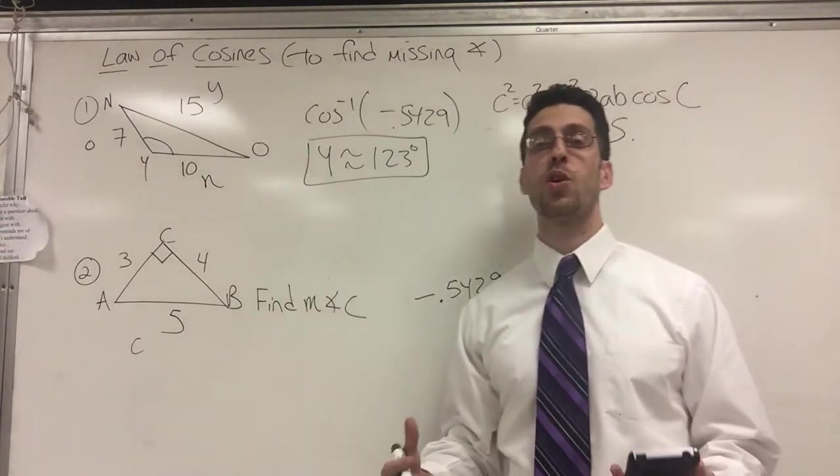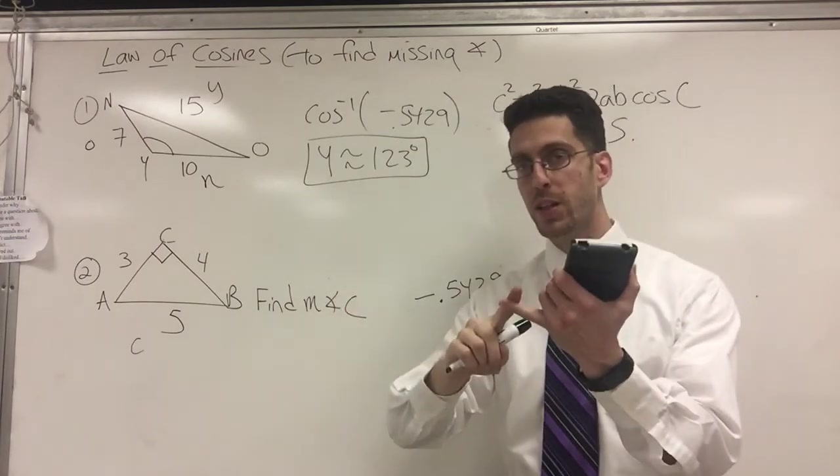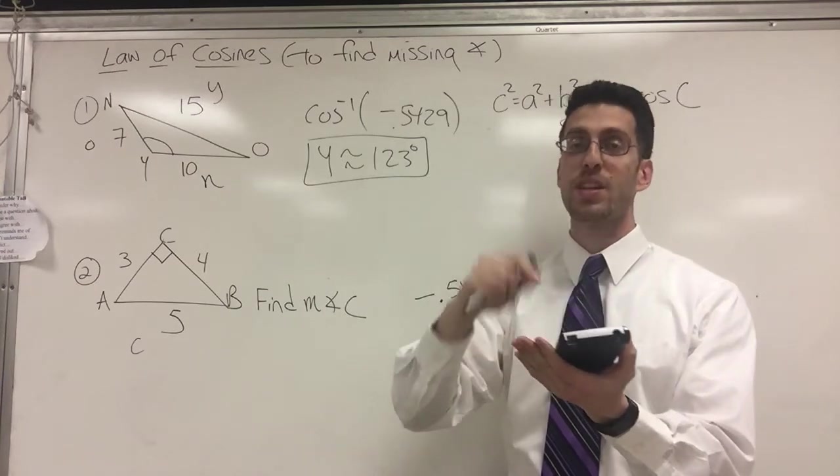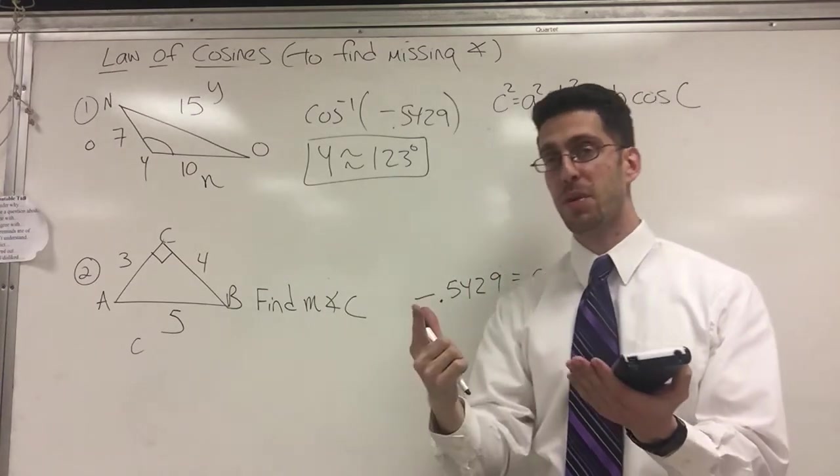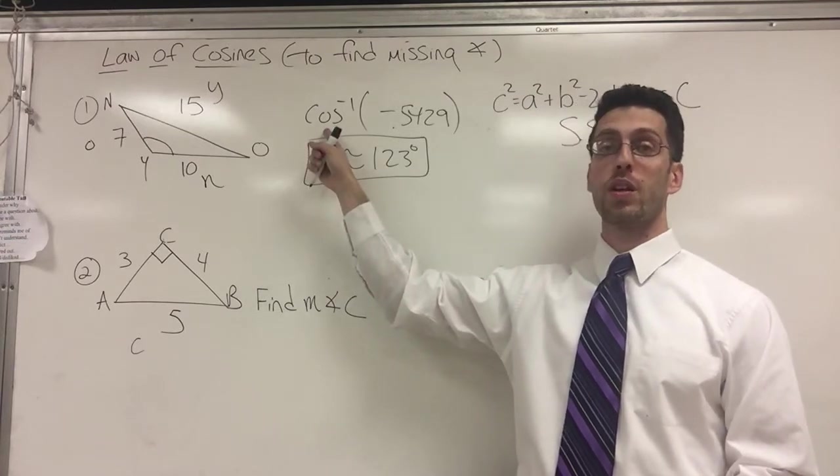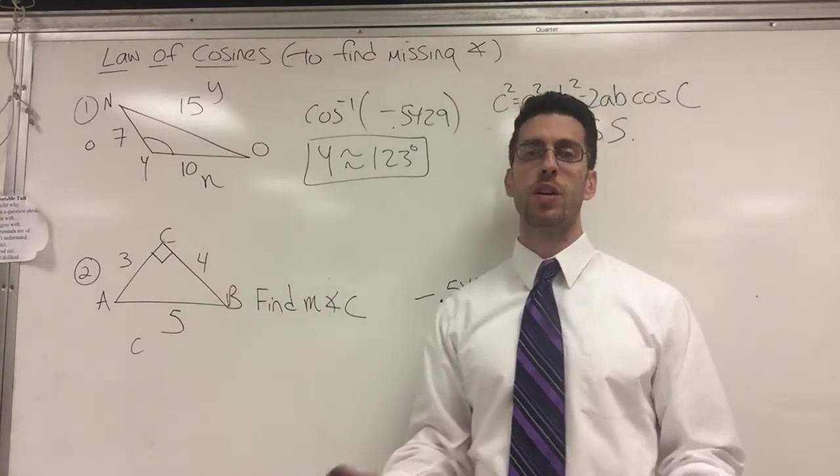So that is how you use the law of cosines to find angles. Write the equation, substitute, expand, combine like terms, additive inverse, divide by the coefficient, and finally inverse of your trig ratio. That's it. Try it again here. Much easier, much quicker. Stick around.